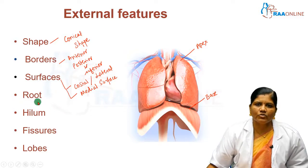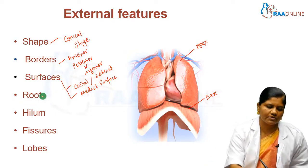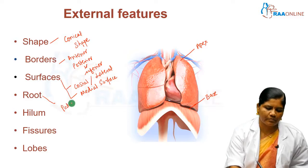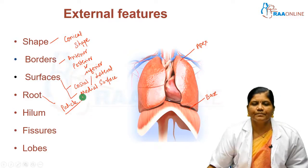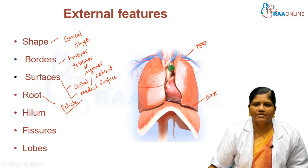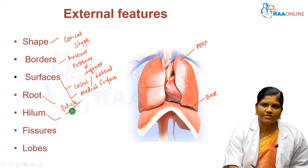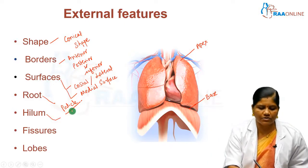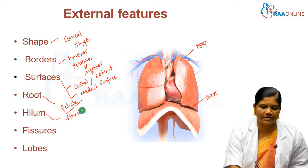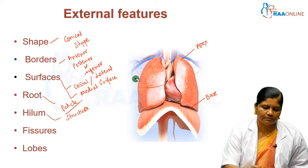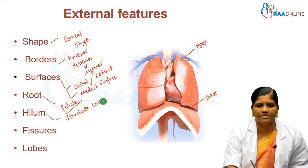The lung has a root and a hilum. The root is a short pedicle that connects both lungs and keeps them in position. It is mainly formed by the bronchi, vessels, nerves, and lymphatics. The hilum is like a passage where structures enter and leave the lungs.